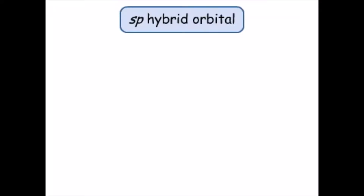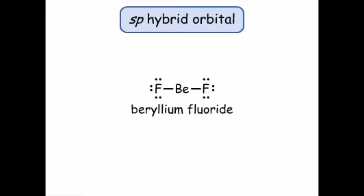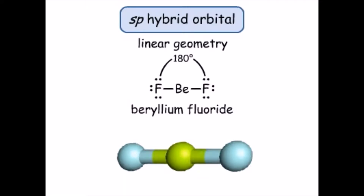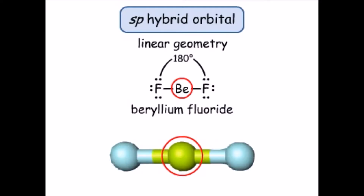The SP hybrid orbital is a combination of one S and one P orbital. An example of a molecule with SP hybridization is beryllium fluoride, which has linear geometry. The three atoms — two fluorine atoms and a beryllium atom — lie in a straight line. The central beryllium atom has two valence orbitals pointing in opposite directions towards the fluorine atoms. The direction of the valence orbitals is dictated by the hybridization of the atomic orbitals.